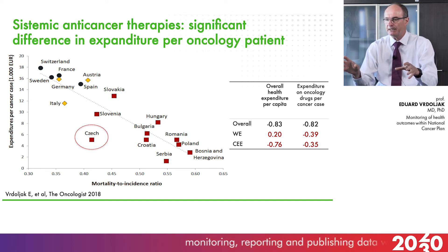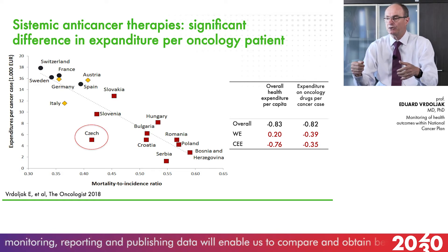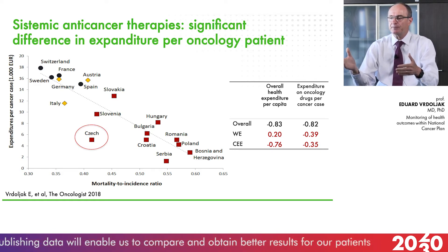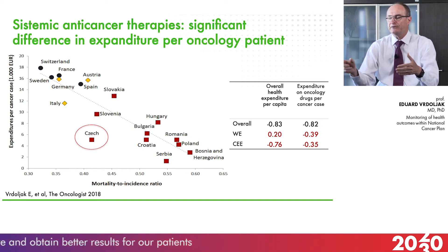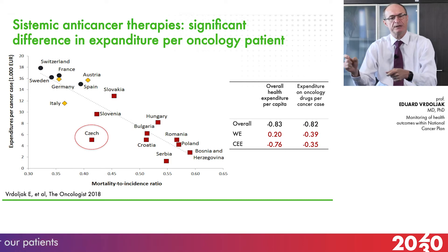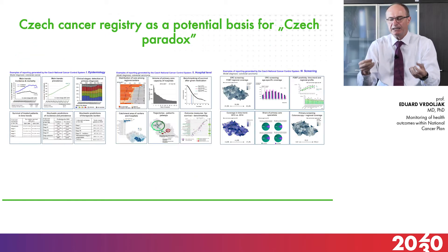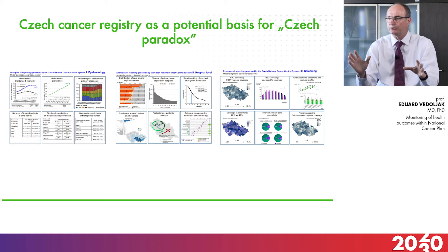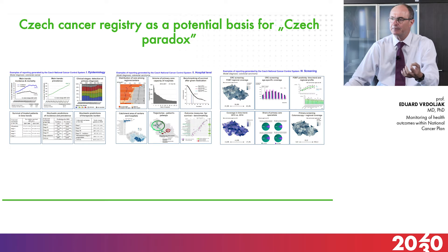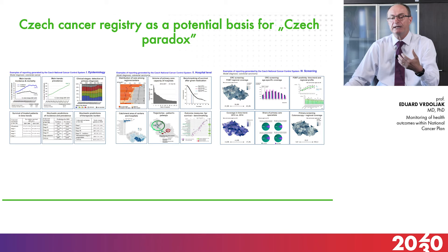Everything started with this: we published a seminal paper a couple of years ago where we found that the Czech Republic is performing much better than Slovakia while spending double less money per new cancer patient. The question was: how? After investigation, we found only one reason — the excellent cancer registry that the Czech Republic has. What they measure includes incidence and mortality in real time, main trends in stage at cancer diagnosis, and the impact of new drugs on overall survival and progression-free survival.